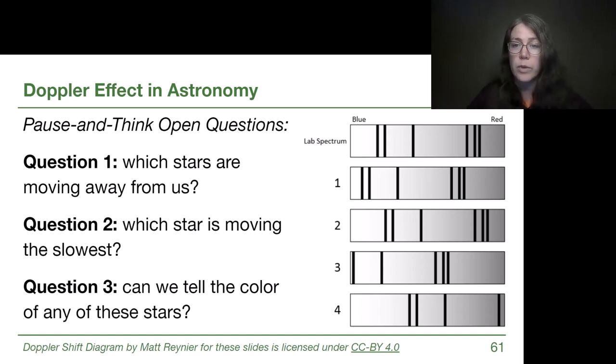For question two, which star is moving the slowest? To answer that question, we have to figure out which pattern is closest to the lab spectrum, totally separate from whether it has shifted to the left or to the right. Which one is closest, the smallest total shift? And the easiest way to do that is if we choose one specific spectral line, and we see how far apart from the lab spectrum that line shows up in each of these patterns. And we see that although stars one and two both have relatively small shifts, star two seems to have the smallest change, and so it is moving the slowest. So question two, the answer is star two.